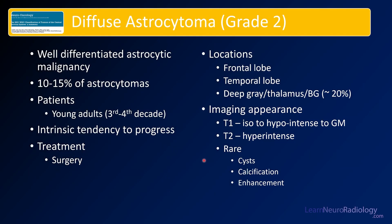This is a case of a grade 2 astrocytoma. These are well-differentiated astrocytic malignancies, about 10–15% of astrocytomas. They tend to occur in younger patients in the 3rd and 4th decades. They do tend to progress and are treated with surgery, sometimes combined with radiation. On imaging, they tend to be iso- to hypo-intense to gray matter and hyperintense on T2. It's pretty rare for them to have unusual features like cysts, calcification, or enhancement.